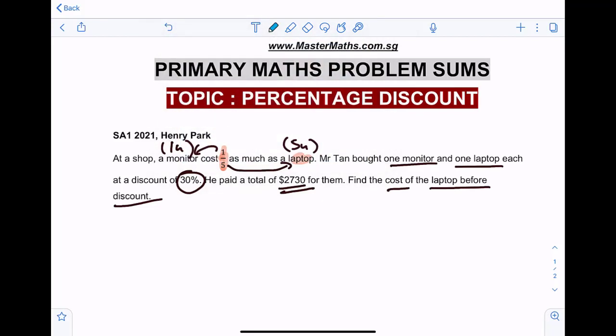Now what we can do is this: for the monitor, we know that the original price is one unit, right? From here, so what is the discounted price then? 100% minus 30% = 70%. So what is 70% of one unit? That will be 0.7 units.